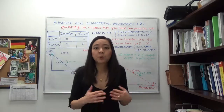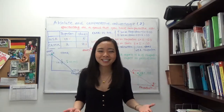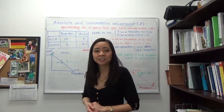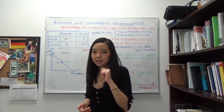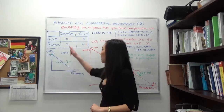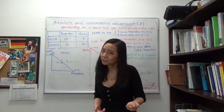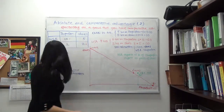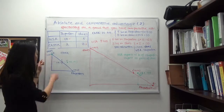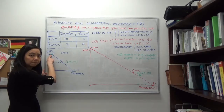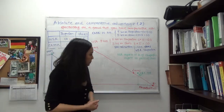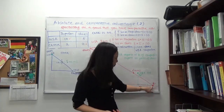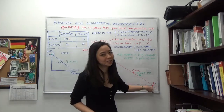Now suppose the two countries open their borders and trade, with each country specializing in the good it has a comparative advantage in. USA specializes in ibuprofen and China specializes in shoes. China produces only shoes — point B — and USA produces only ibuprofen — point B prime — with no shoes.